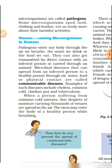Disease-causing microorganisms in humans (manushyon mein rog karak sukshn jiv): Pathogens enter our body through the air we breathe, the water we drink, or the food we eat. They can also spread through direct contact with an infected person or animal. Microbial diseases that can spread from an infected person to a healthy person through air, water, food, or physical contact are called communicable diseases. Examples include cholera, common cold, chicken pox, and tuberculosis.